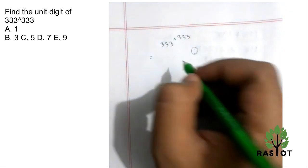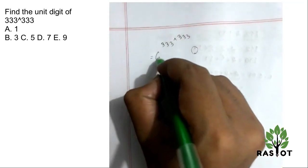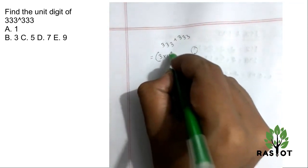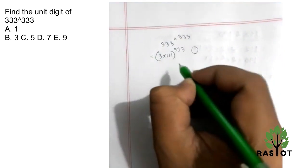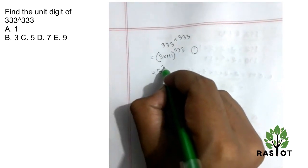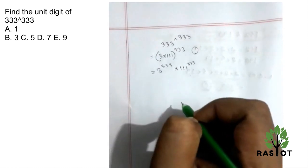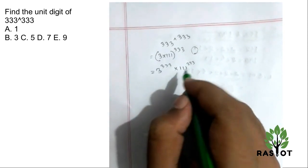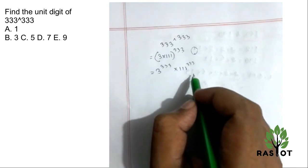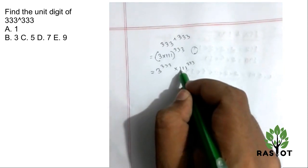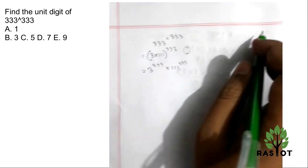This 333 we can write as 3 times 111 to the power 333. So the pattern follows through your power. 111 to the power, so 3 to the power.